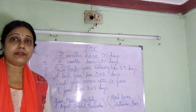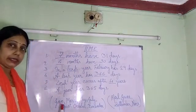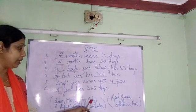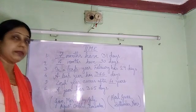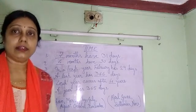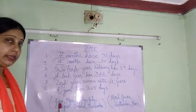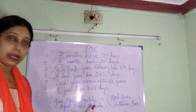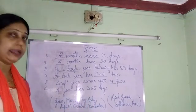So which are the months having 31 days? They are January, March, May, July, August, October, and December. These are the 7 months that have 31 days.